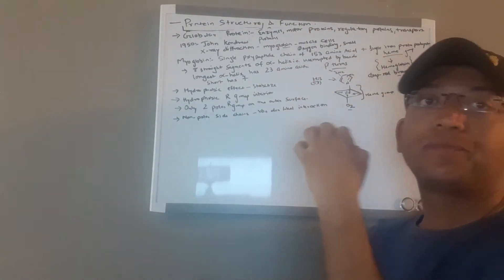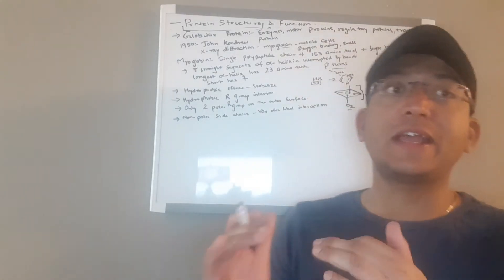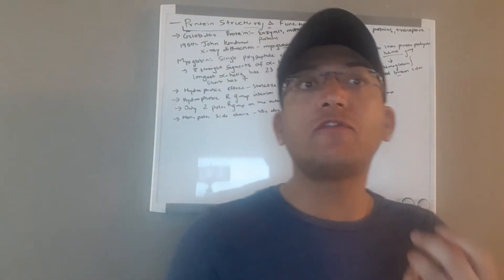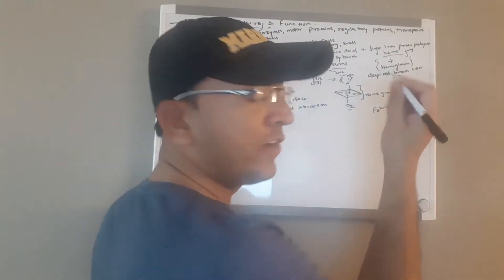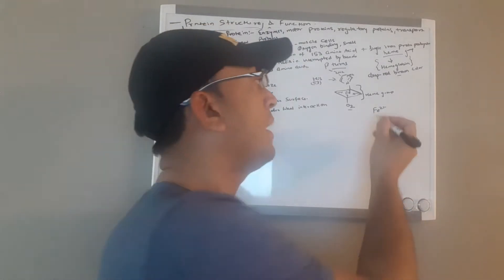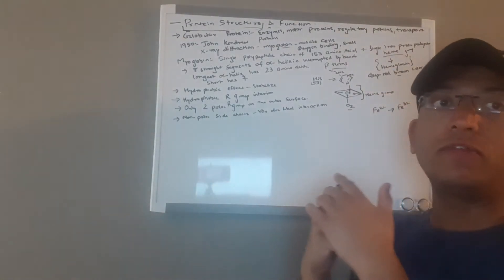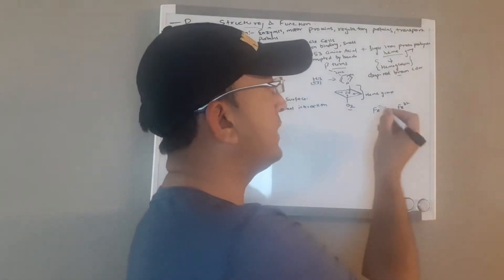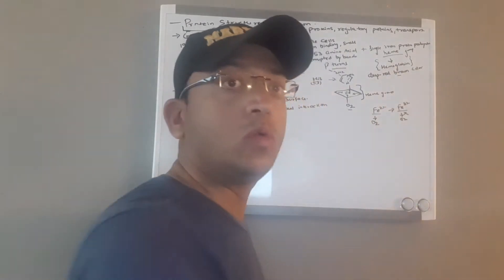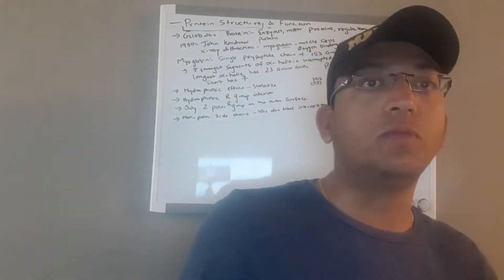Within this pocket, the accessibility of the heme group to solvent is highly restricted, as it is really inside. This is important for function because free heme groups in an oxygenated solution are rapidly oxidized from ferrous (Fe2+) to ferric form, which is inactive in the reversible binding of O2. When the iron is in the ferric form, it will not bind oxygen.